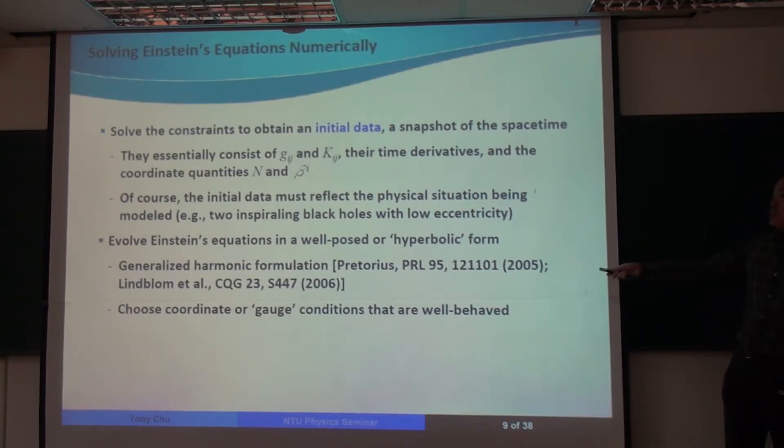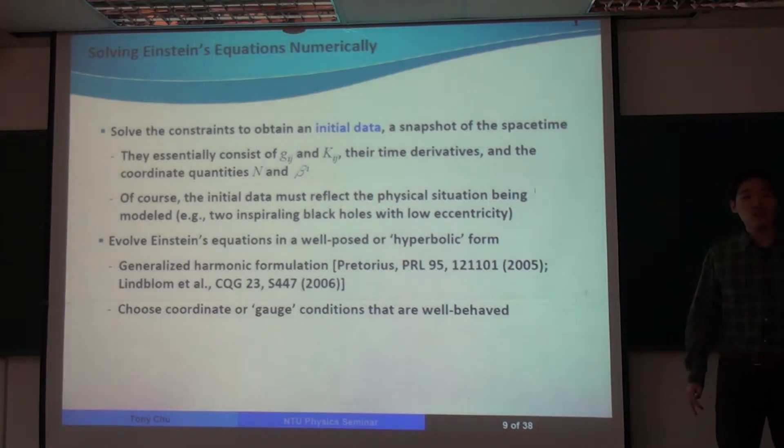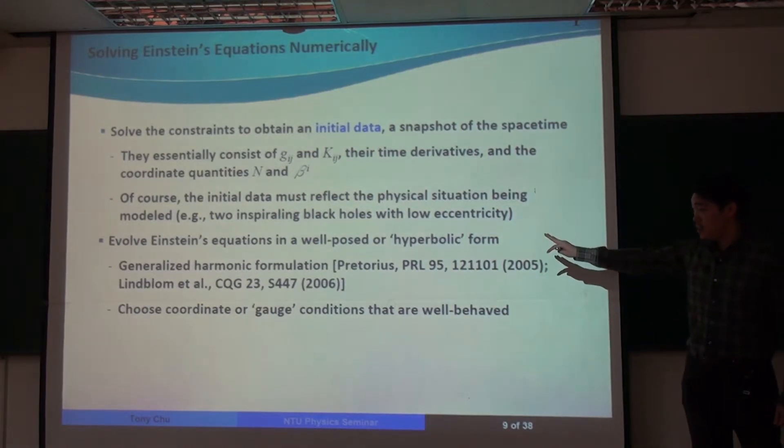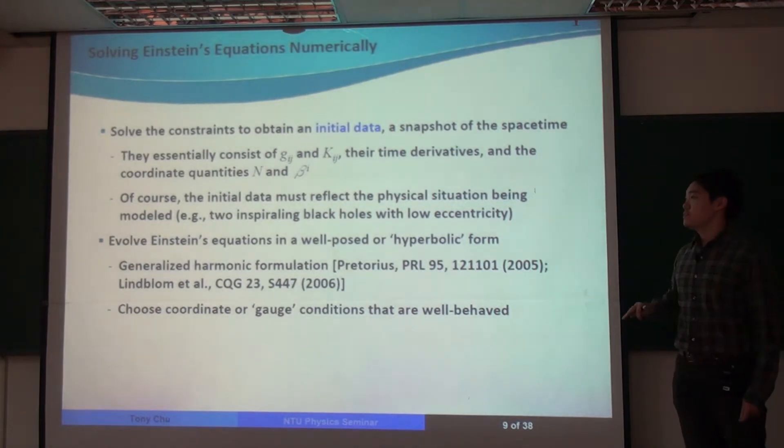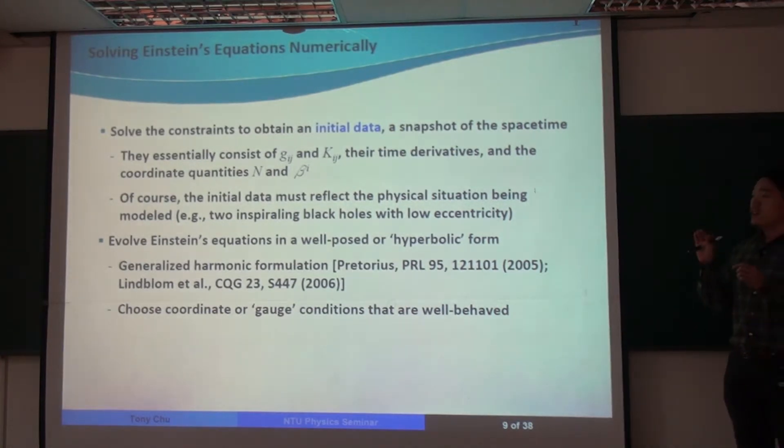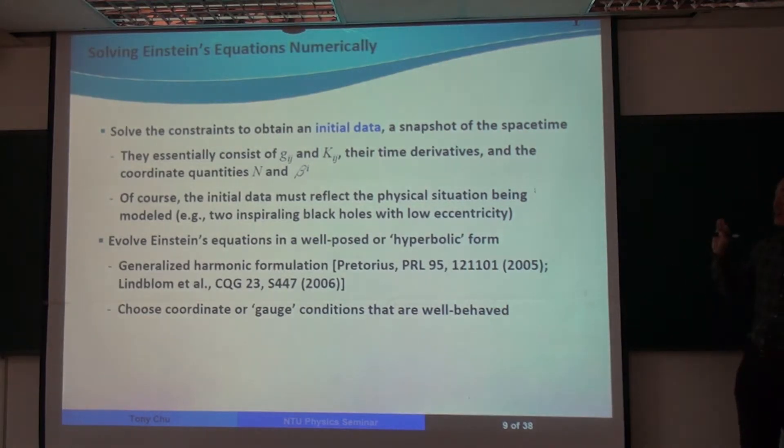And in addition, once we have our initial data, we evolve the Einstein evolution equations. We need to do this in a form where the equations are well-posed or hyperbolic. What this means is that if the constraints are satisfied at an initial time, then they remain satisfied at all times.